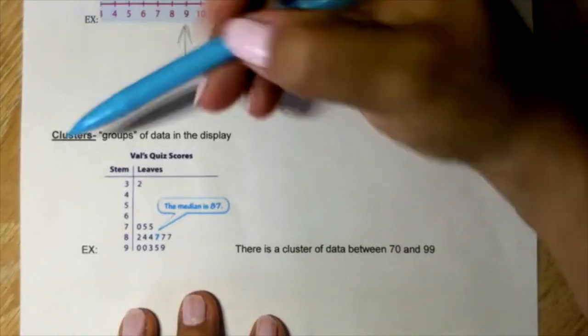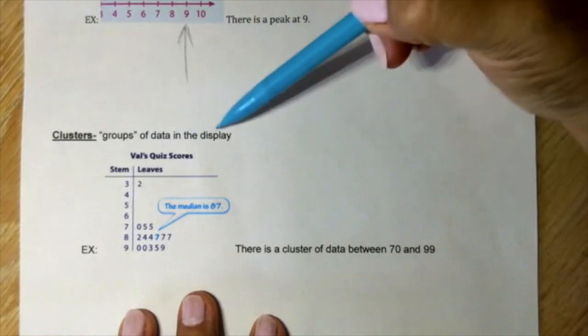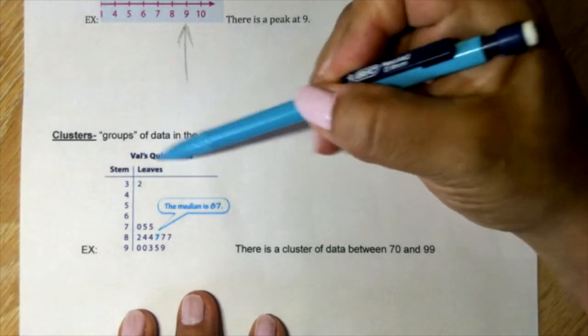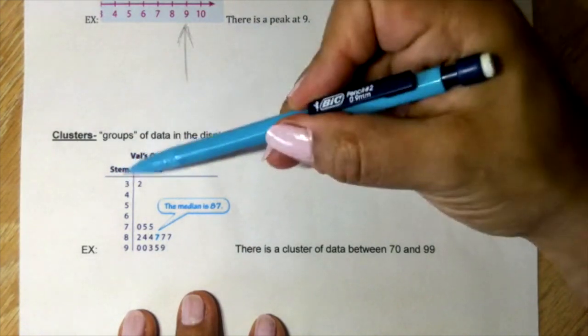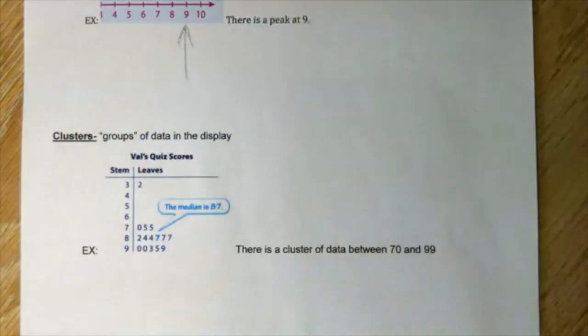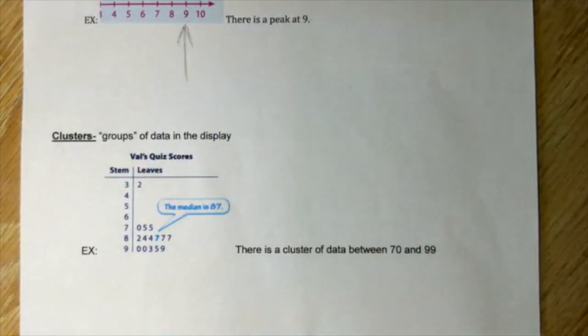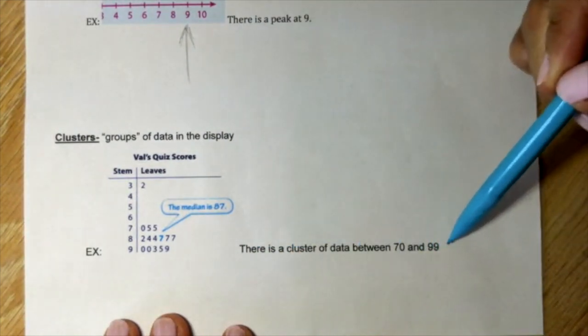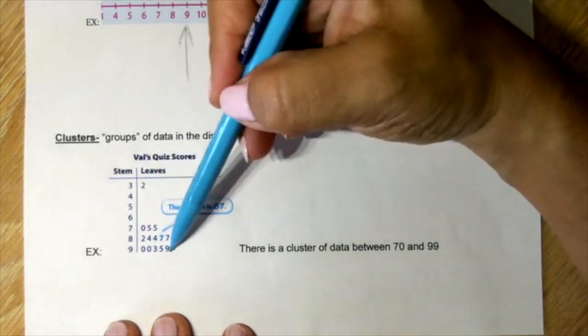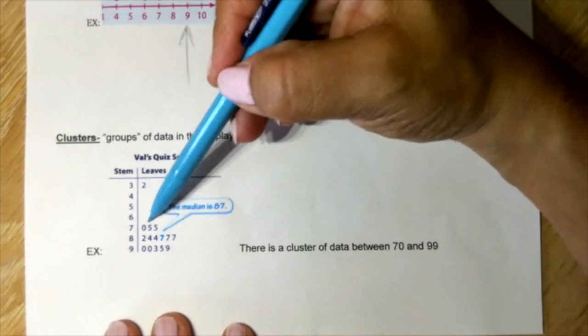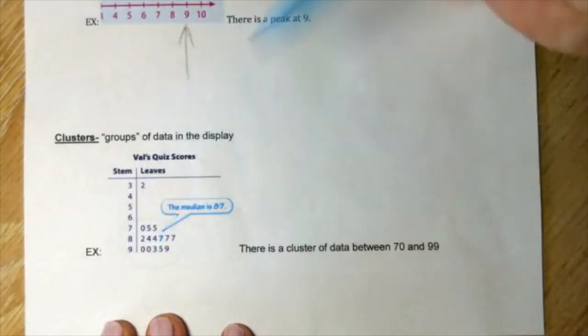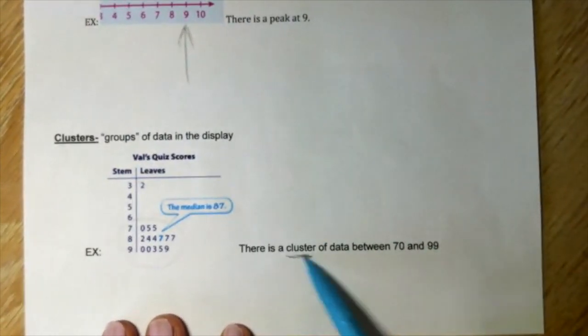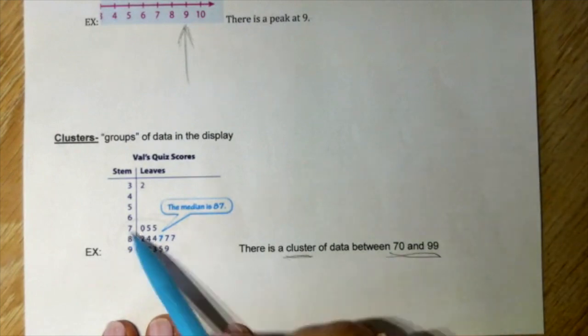Clusters - groups of data in the display. Here we have quiz scores and the stem and leaf. There is a cluster of data between 70 and 99. You see how they all like crowded? That's what cluster means. There's a cluster between 70 and 99. All of them are here, down here.